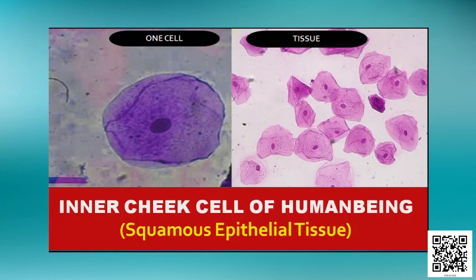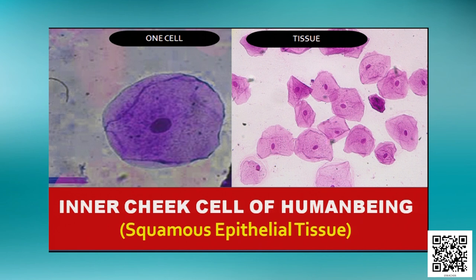In a laboratory experiment, we scrape inner cheek cells with a toothpick or ice cream spoon, place them on a slide, add methylene blue, and observe under the microscope. You can see this type of cell — on the left side one cell is shown, and on the right side a group of cells or tissue is shown. These are none other than squamous epithelial tissue.